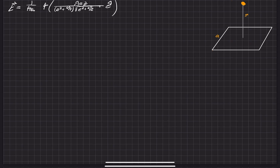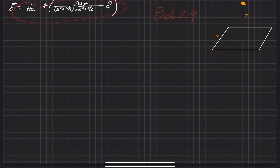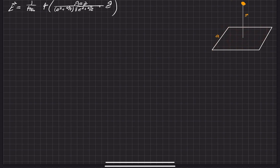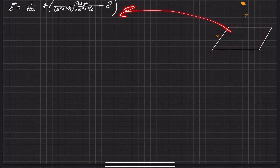One way we can attack this problem is to use a previous answer from problem 2.4, where we found instead of a patch, it's a square loop — infinitely thin line segments. We can make those small and integrate them, keep adding them up until we get to a full patch. The answer from that previous problem 2.4, for just that square loop, is equal to this expression.